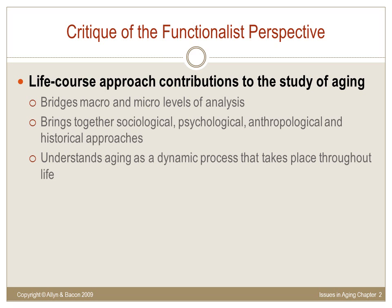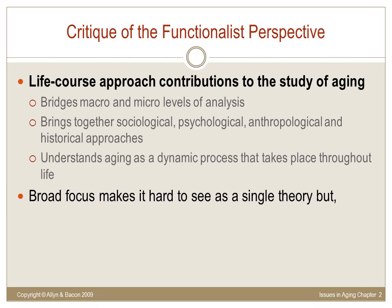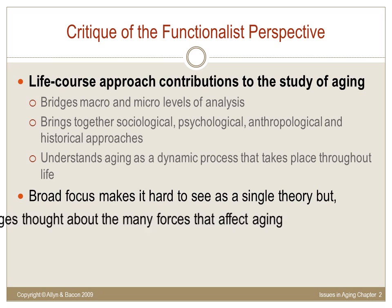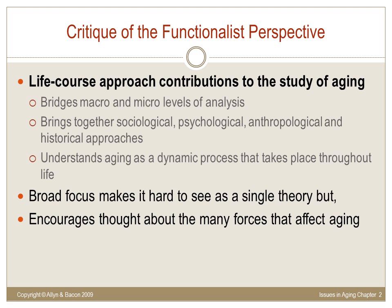The life course perspective also looks at transitions and trajectories. Transitions refer to changes in social status or roles and may include marriage, divorce, remarriage, widowhood, parenthood, retirement, work, and job changes. Trajectories refer to long-term patterns of stability and change and may include many transitions. For example, a marital trajectory may involve transitioning from being single to married, then divorced, then remarried, and perhaps to widowhood — or it may simply be single to married to widowhood. Life course perspective is not necessarily seen as a single theory but a perspective — an amalgamation of multiple theories.